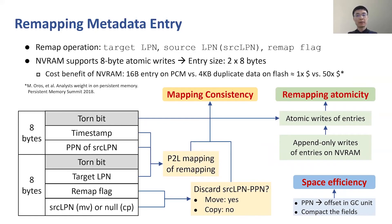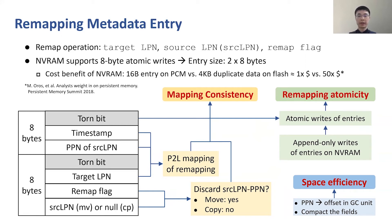In the design of remapping metadata entries, we achieved three goals. First, for mapping consistency, each entry contains the P2L mapping changes of the remap operation. Second, remapping atomicity is guaranteed by adding a time bit in every eight bytes of each entry and by appending entries on NVRAM. Third, we improved space efficiency by compacting the fields in each entry. In addition, we found that the adoption of NVRAM is cost-effective because storing a metadata entry on NVRAM is much cheaper than storing four kilobytes of duplicated data on flash.